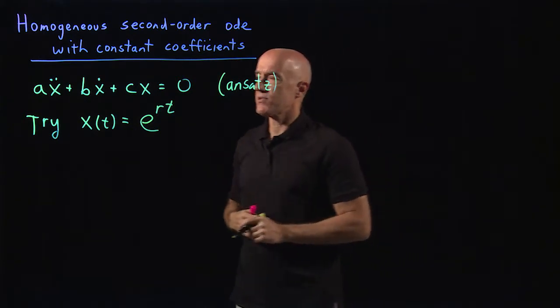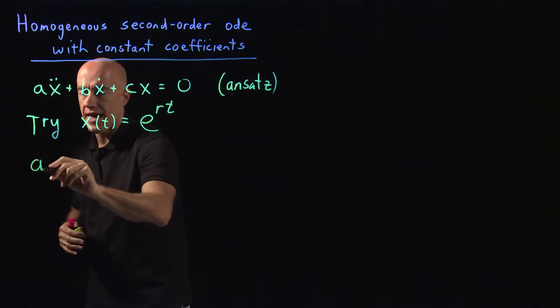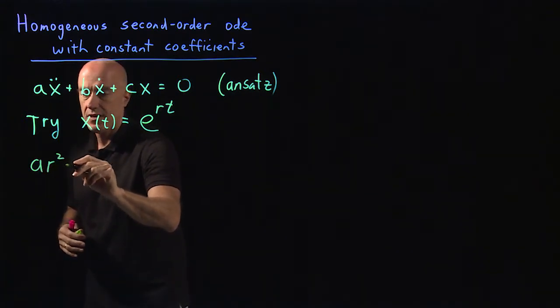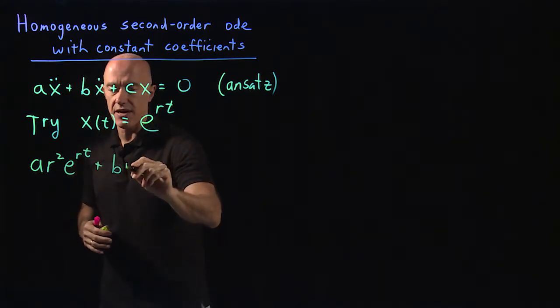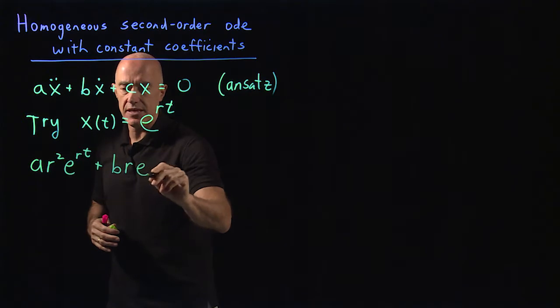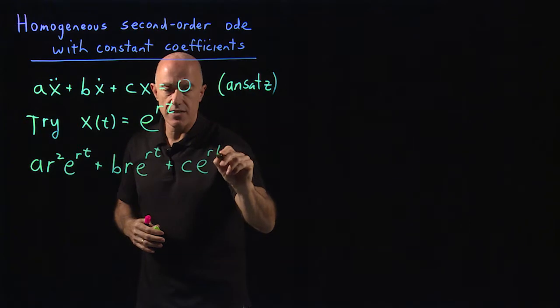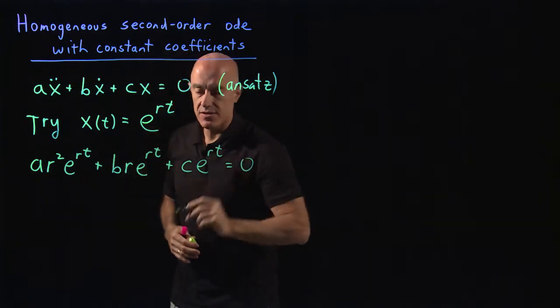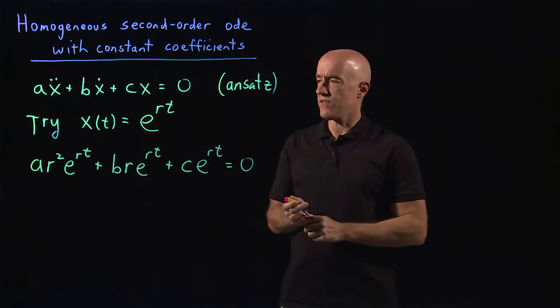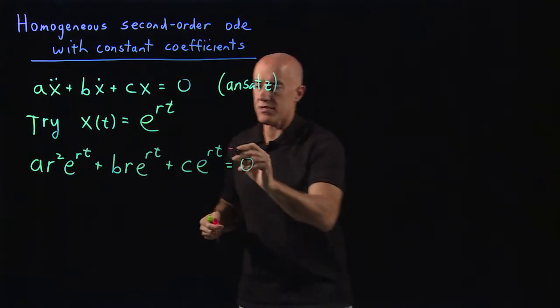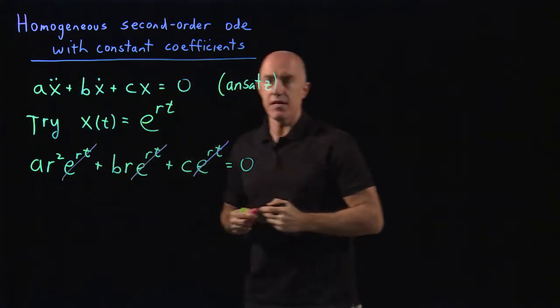So we substitute in, the second derivative brings down an r squared. So we'll have ar squared e to the rt, plus b, the first derivative brings down an r, times e to the rt, plus c times e to the rt equals 0. Our choice of exponential function is rewarded here because this function then cancels out of the equation.